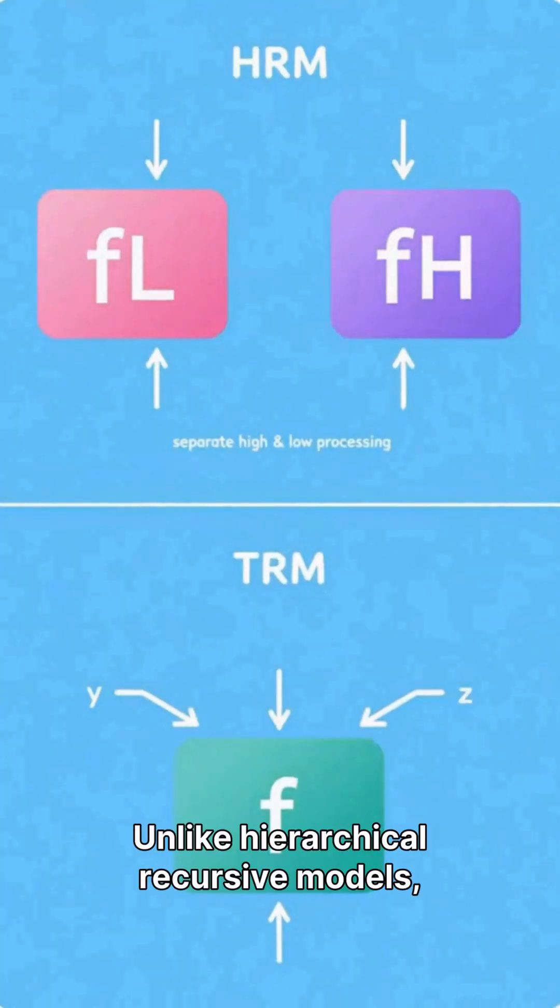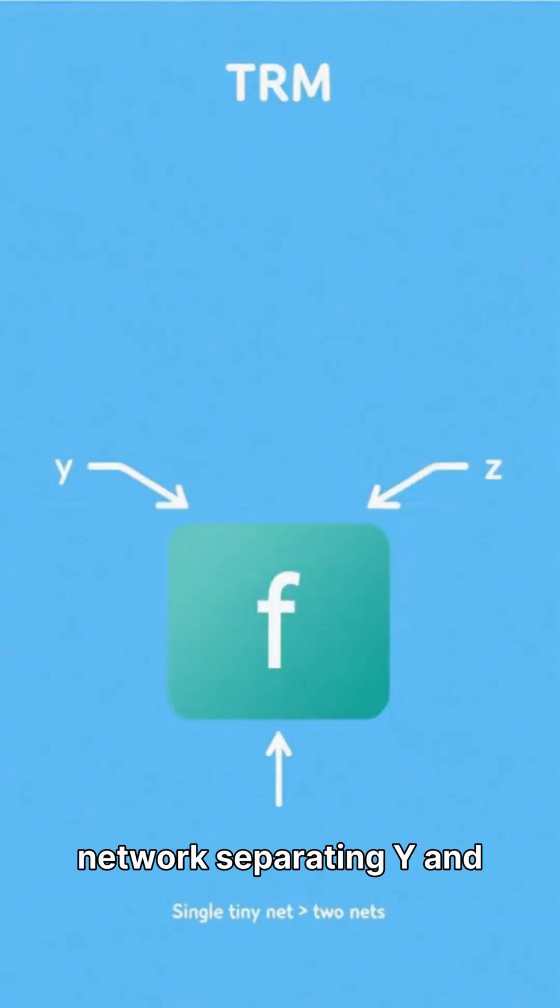Unlike hierarchical recursive models, TRM uses a signal network separating Y and Z for superior performance.